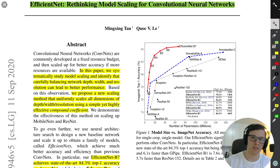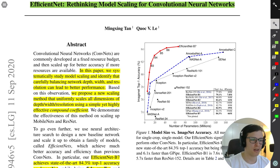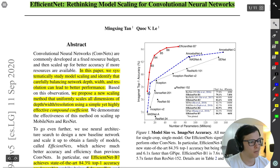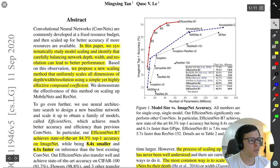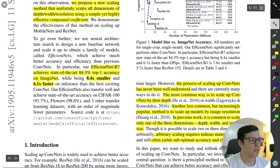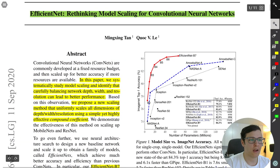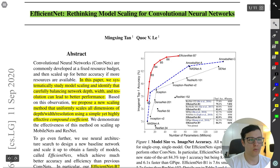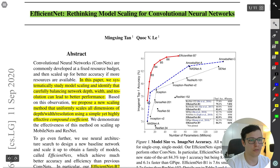They don't introduce a new architecture like ResNet, which introduced the novel skip connection idea. Rather, they take some baseline and propose a new scaling method that uniformly scales all dimensions of depth, width, and resolution using a simple yet highly effective compound coefficient. EfficientNet B0 achieves state of the art on ImageNet while being smaller and faster, and scaling up to B7 increases accuracy further with more parameters.